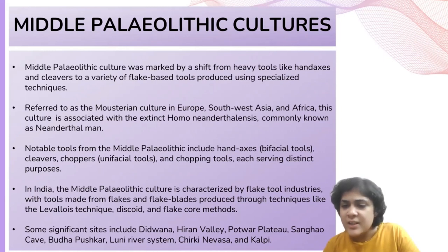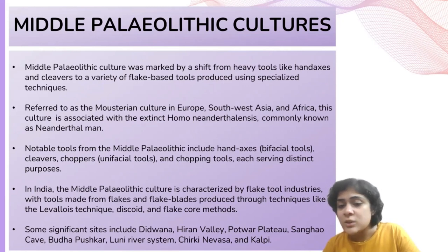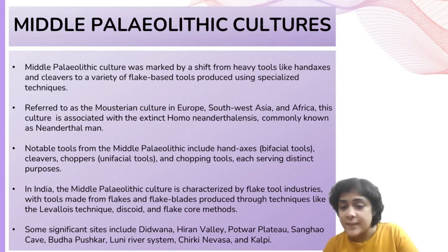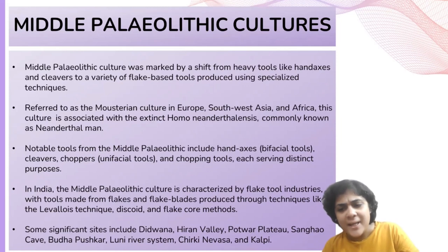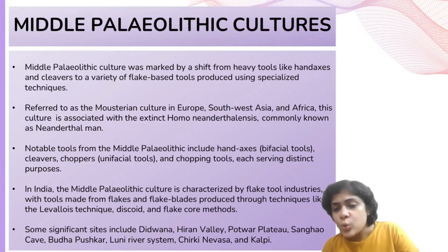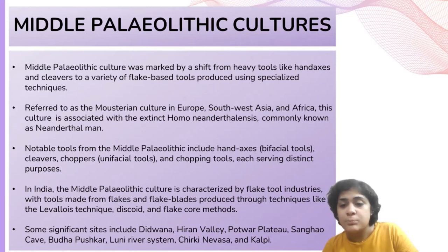In India, the Middle Paleolithic phase is characterized by a flake tool industry, initially referred to as the Middle Stone Age and later recognized as the Middle Paleolithic. These tools were made from flakes using various techniques including the Levallois technique in some regions. There is a continuation of the late Acheulian lithic tradition with improvements in bifacial flaking, marginal retouch, and the inclusion of smaller hand axes and cleavers. In many areas, there was a shift from coarse-grained rocks like quartzite to fine-grained rocks such as chert, jasper, and agate. Tool types included various scrapers, borers, awl points, and points.